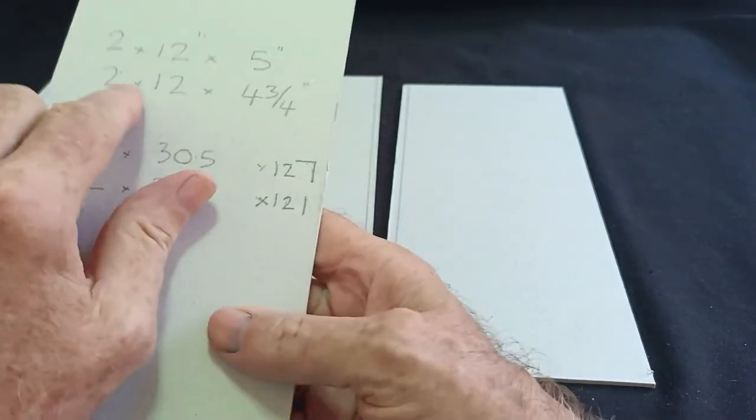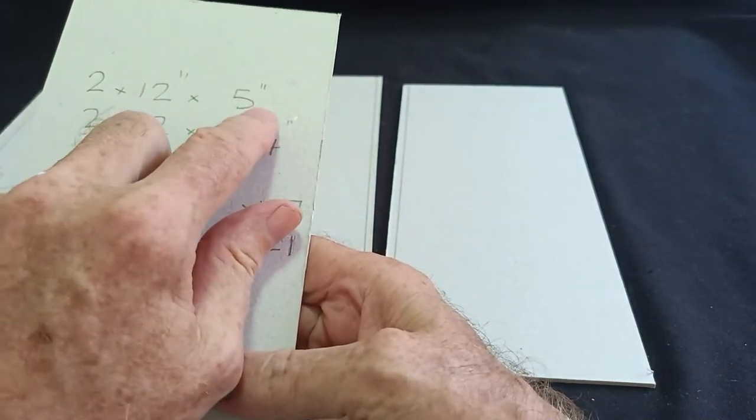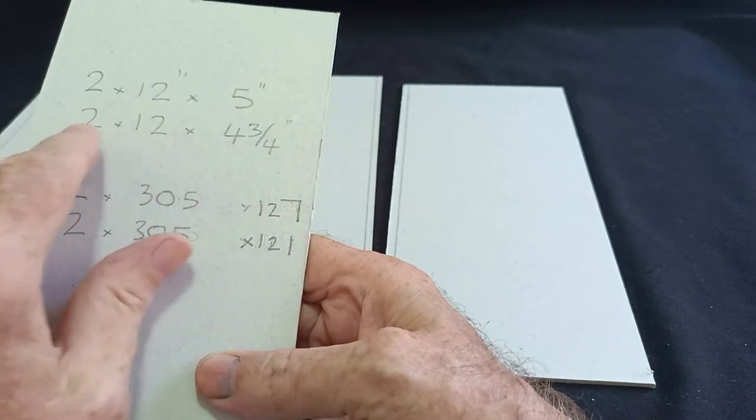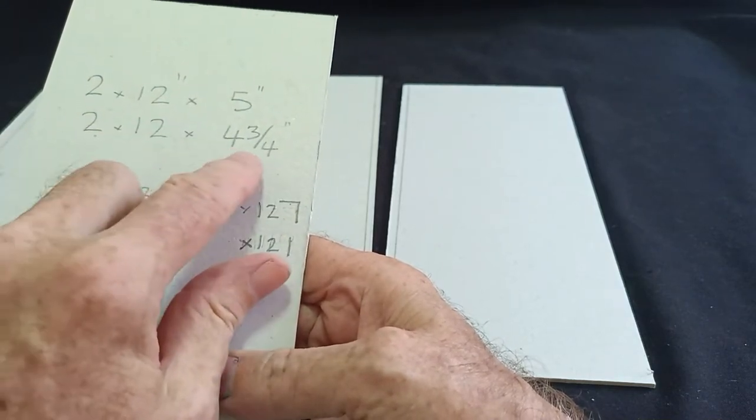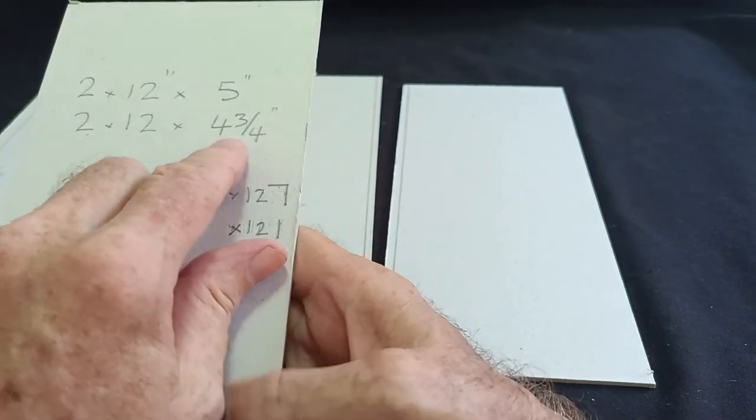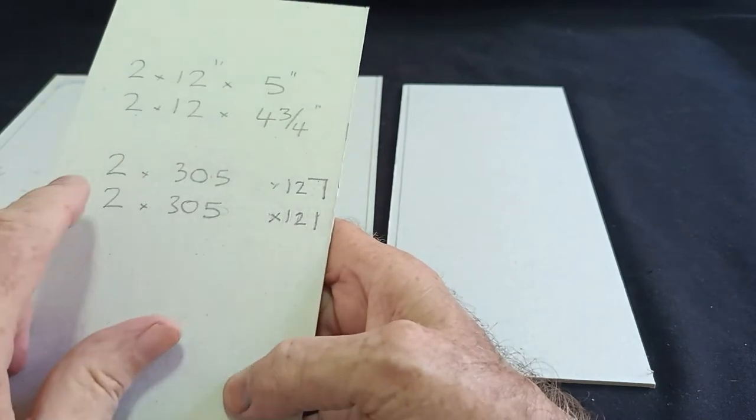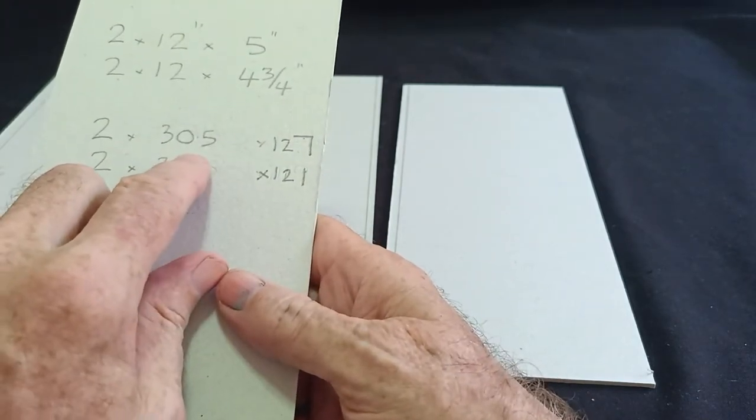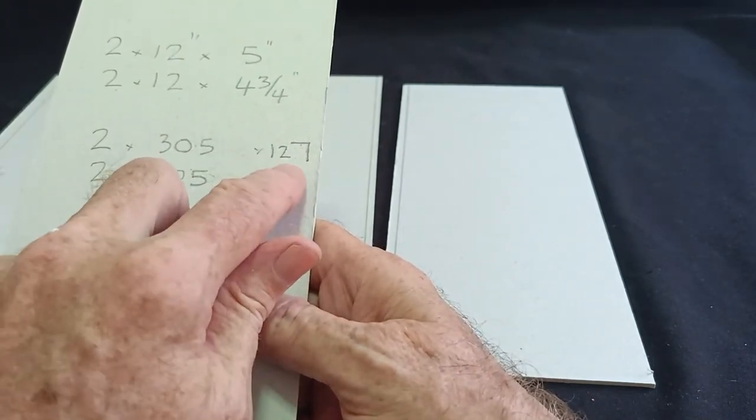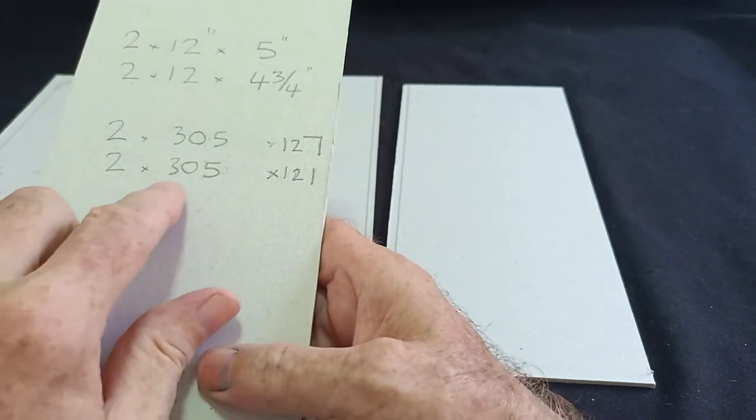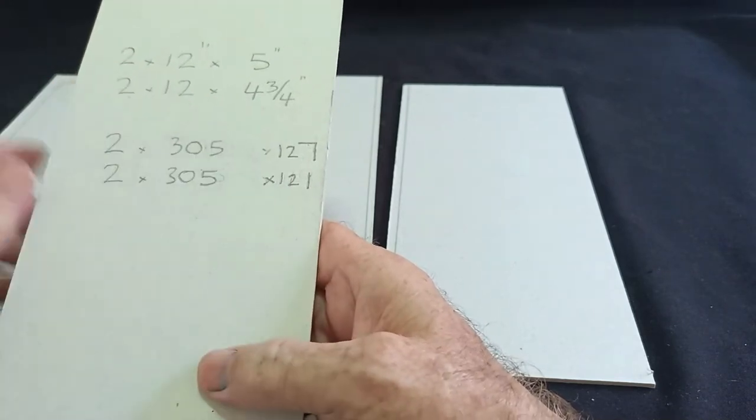Two of the pieces need to be 12 inches by 5 inches. Okay and the other two 12 inches by 4 and 3 quarter inches and if you work in metric that's 305 millimeters by 127 and 305 by 121.